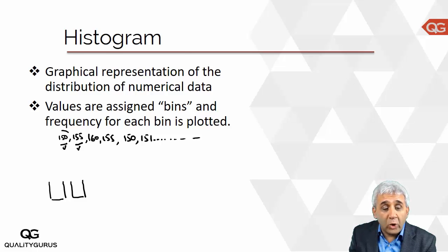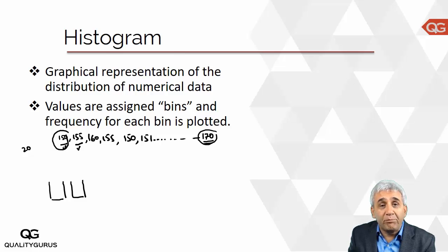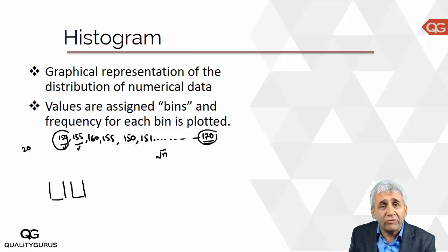To create bins, you look at the lowest number — let's say 150 — and the highest number, which is 170. The difference between the lowest and highest is 20. Now you need to decide how many bins to create. A general rule of thumb is to take the square root of n (the total number of items). There are other methods, but this is the most commonly used one.